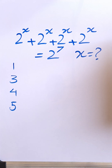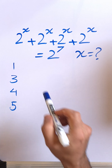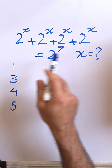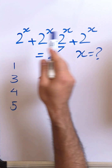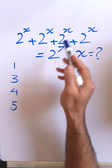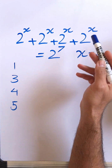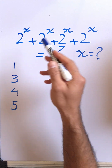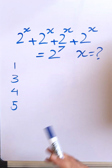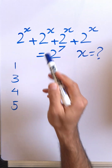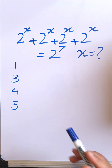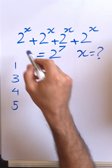So if you want to solve this problem, please pause the video because I'm going to solve it right now. What is the value of x? So 2 to the x, copied 4 times — 2 to the x plus 2 to the x plus 2 to the x plus 2 to the x plus 2 to the x — equals 2 to the 7. What's the value of x?